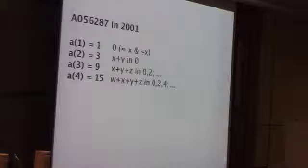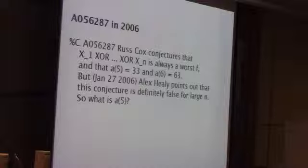In early 2006, I was talking to my then roommate Alex Healy about this sequence. He pointed out that there are some results from circuit complexity that parity can be done in log depth. That means if you expand to not have a circuit but a formula, the complexity can't be worse than polynomial in n. So it's certainly not the case that it grows exponentially and is parity. Alex sent this comment to Neil, and Neil took the database and had this great comment: 'but Alex Healy points out that this conjecture is definitely false for large n. So what is a of 5?'